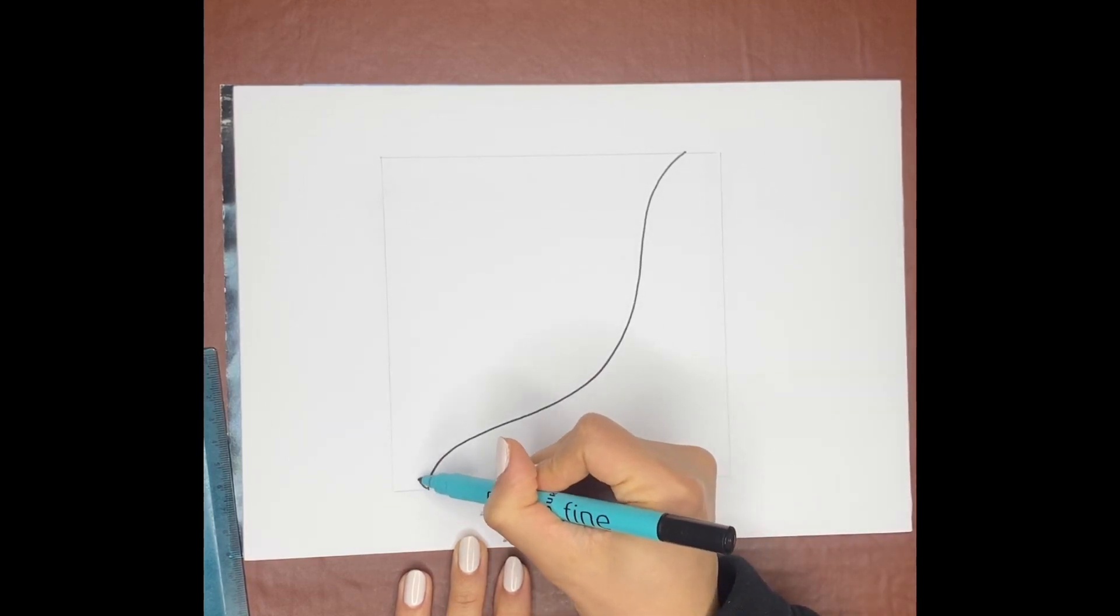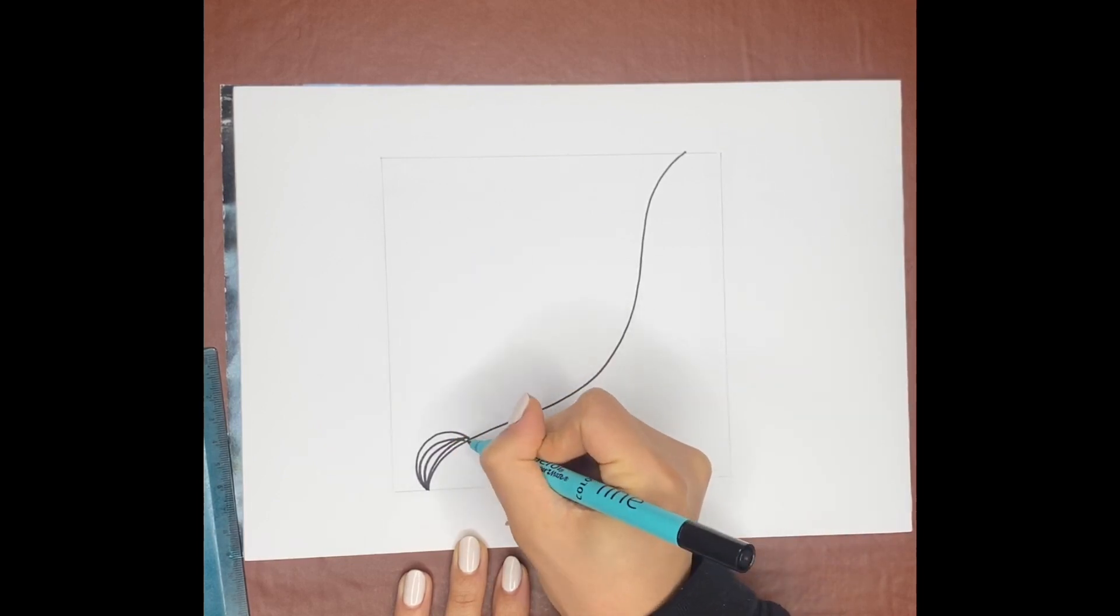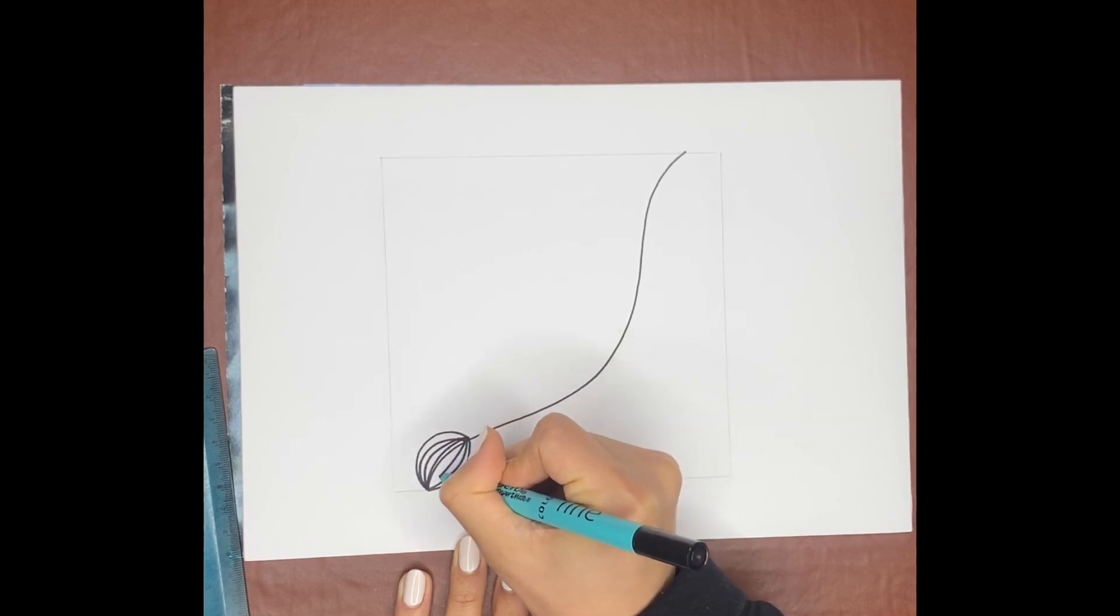Then you need to draw these little semi-circles that join from edge to edge. It doesn't have to be perfect. The whole point of this activity is it's meant to calm you, it's meant to relax you.